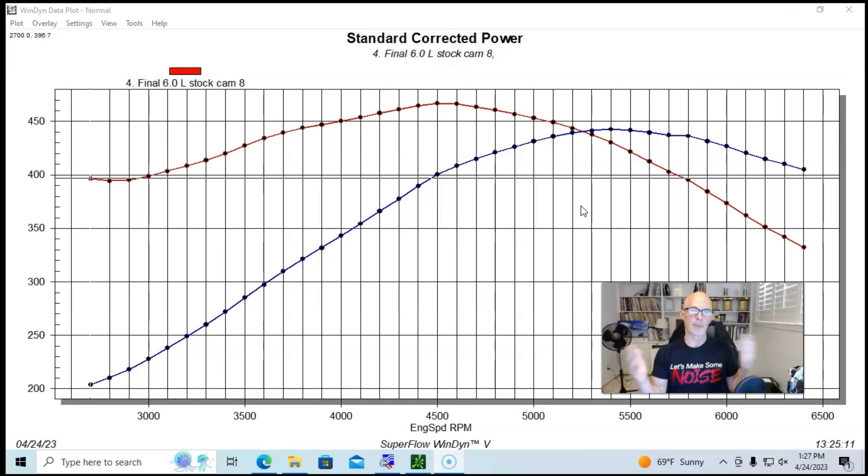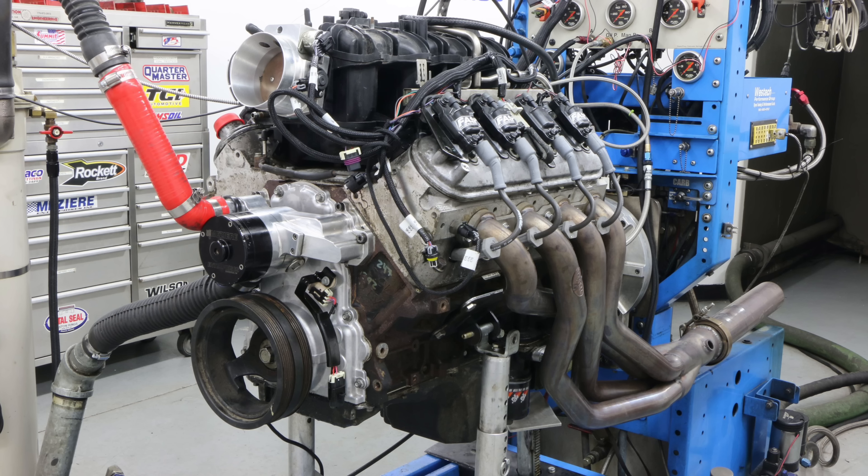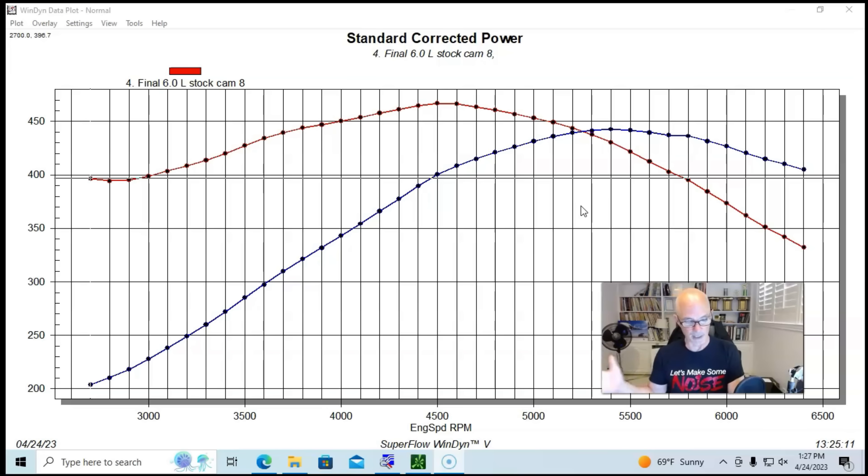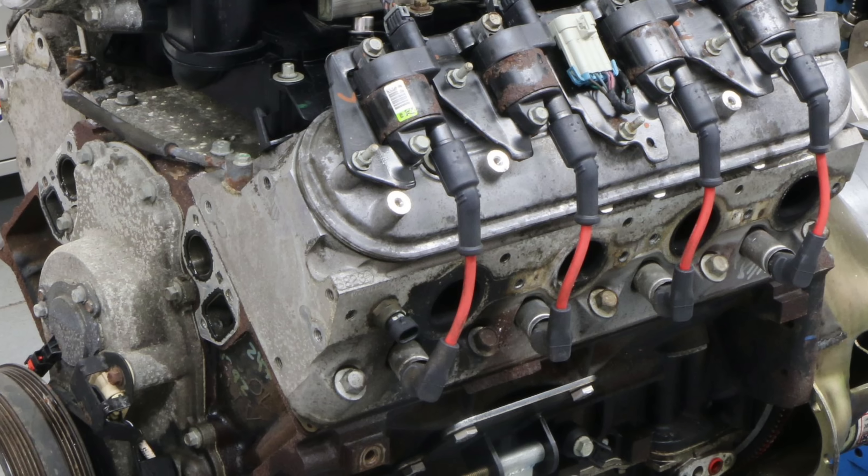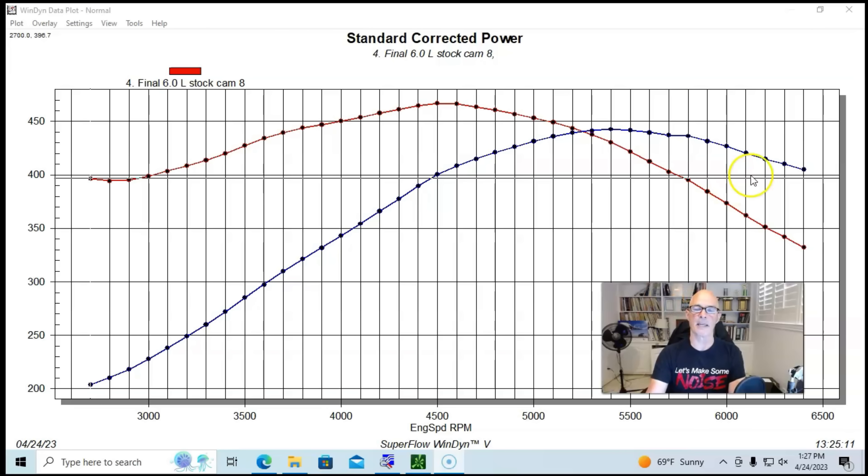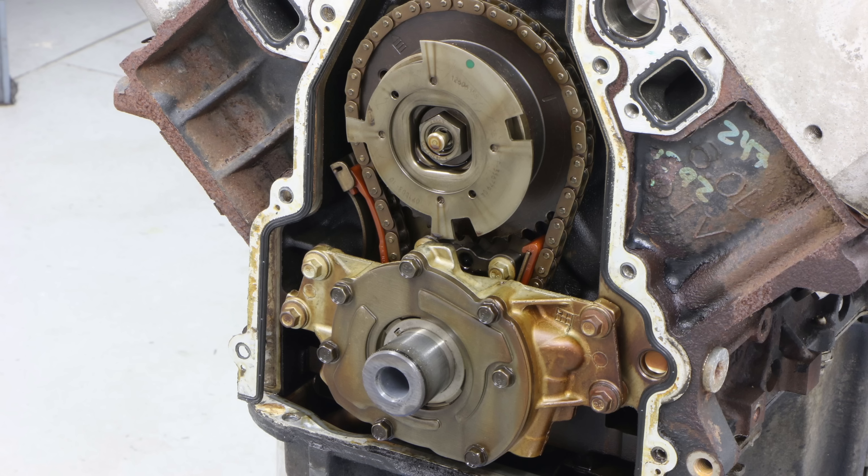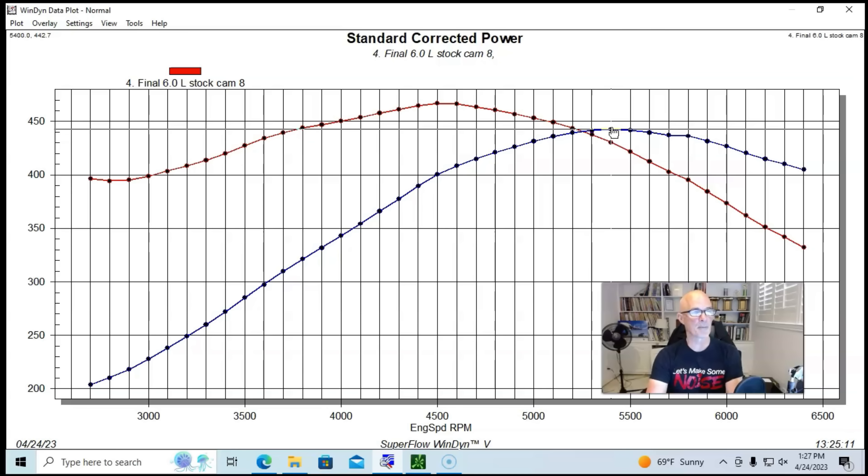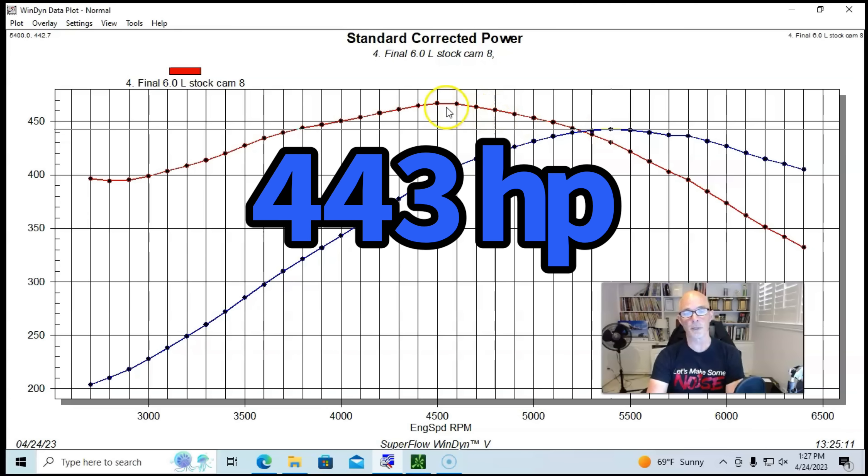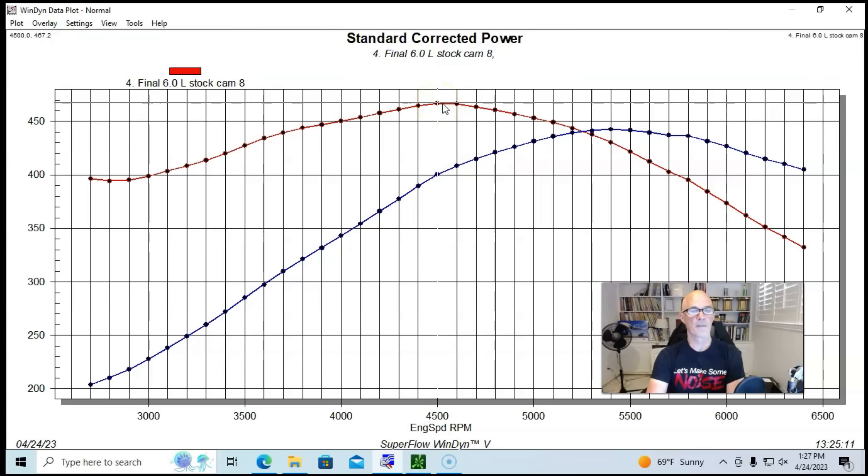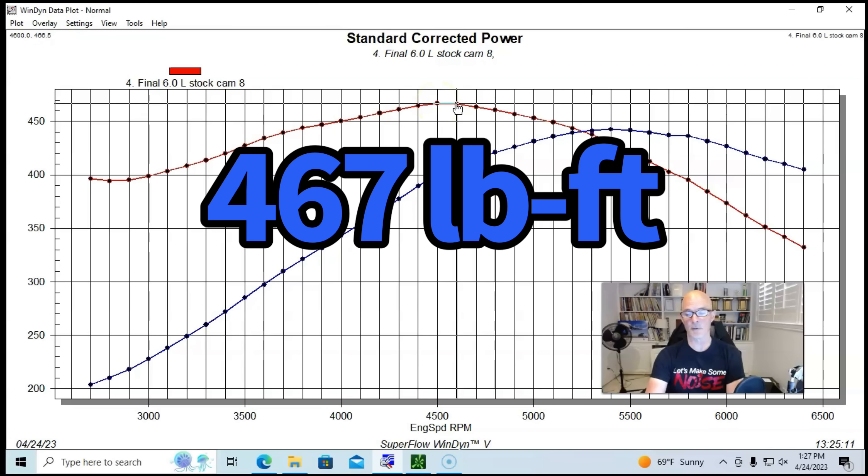But we ran this thing first with the stock cam. We ran with our stock 6 liter cams because the LY6 originally came with VVT, we had removed that, but running with our fixed cam, this thing made 443 horsepower and 467 foot-pounds of torque.